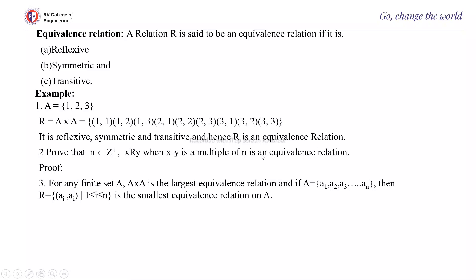Therefore, it is an equivalence relation. Likewise, for other problems you can prove the relation as an equivalence relation. For any finite set A, A cross A is the largest equivalence relation. And if A = {a1, a2, ..., an}, then all the reflexive elements — that is, the diagonal — form the smallest equivalence relation on A.